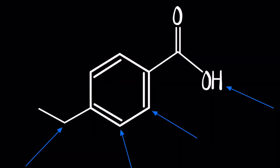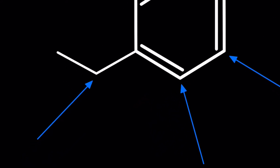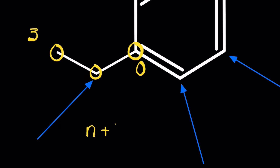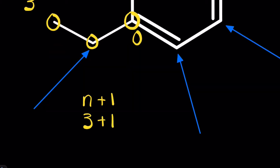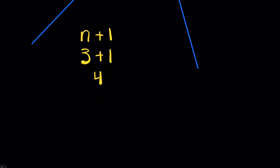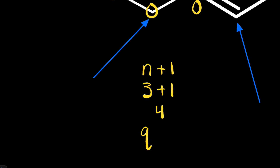Now let's look at a spin-spin splitting exercise. Keep in mind that multiple absorptions of a nucleus are caused by the interaction or coupling of the spins of nearby nuclei. We need to look at the neighboring carbon atoms and whether or not they have hydrogens attached. Looking at this CH2 carbon, it is attached to a CH3 over here with three hydrogens, and a carbon with zero hydrogens over here. Applying the N+1 rule — three plus one — we're going to have four. This is going to be a quartet, denoted with Q.